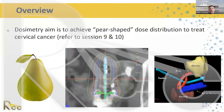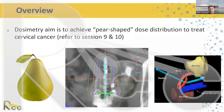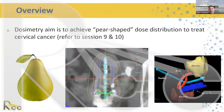This slide shows the dosimetry from a tandem and ring applicator, very similar to that of the tandem and ovoid since it's essentially the same geometry. The 3D image shows the general pear-shaped distribution. The intrauterine tandem passes through the center of the ring. The bladder is located anterior to the applicators, the rectum is posterior, and the rectal retractor — colored dark blue — is located between the applicator and the rectum, pushing the posterior vaginal wall away from the applicator and adding space between the applicator and rectum.